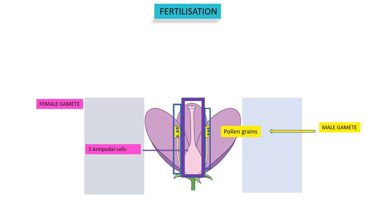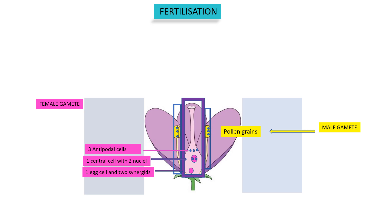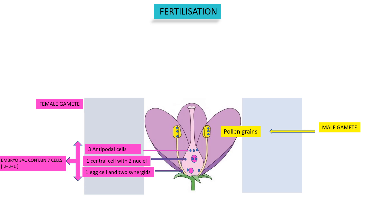There are three antipodal cells. In the center, there is a large central cell containing two nuclei. There are three cells at the micropylar end. In the center, an egg cell is surrounded by two synergids. So the total cells present in the embryo sac are seven cells with eight nuclei.